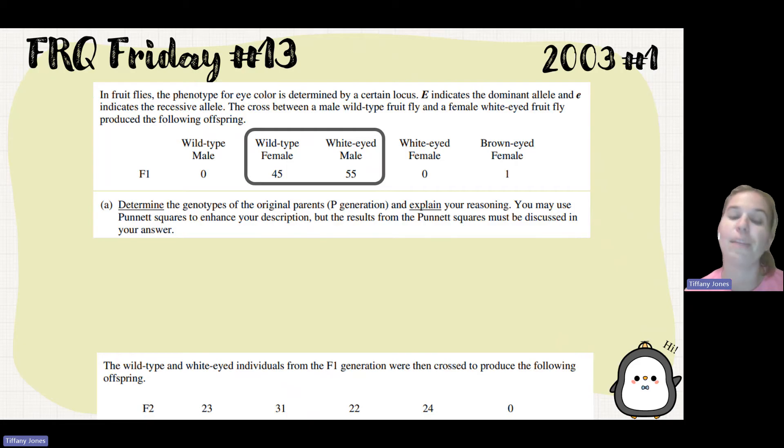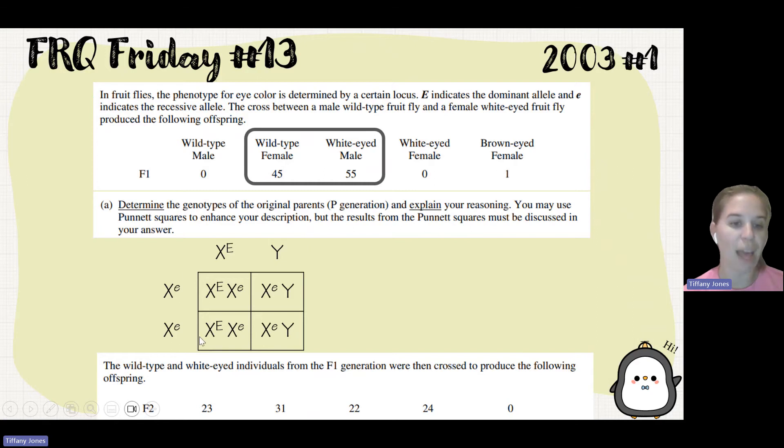So I think that the white eye is a recessive trait. And so if we cross the wild type male, it would have a dominant allele, with a white eyed female, she would have both of her X's with a recessive allele on it in order for her to show that white eye. If I cross that, I end up with half of my offspring being carrier females, so they'll be wild type, and then the other half are white eyed males. So I have a 50-50 shot, which approximately is what we see here.